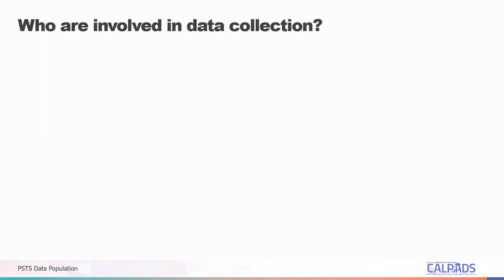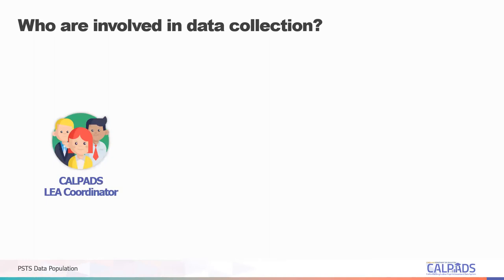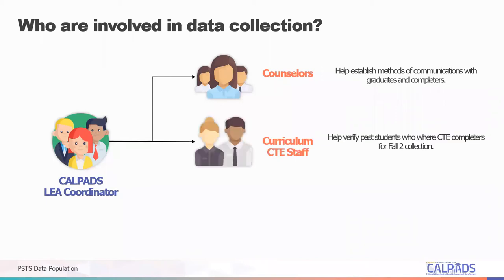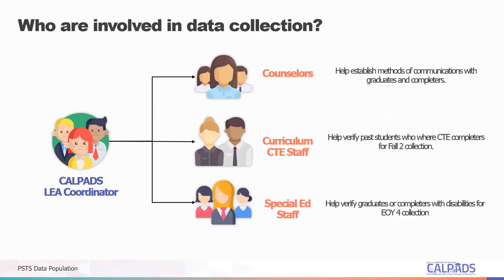This brings us to the question of who is involved in this data collection. Every CALPADS submission requires team effort. The CALPADS LEA coordinator can establish a team of resource persons to help identify eligible students and create a process to gather the data. CALPADS coordinators may involve school counselors to establish methods of communication with graduates and completers. Curriculum staff would help verify past students who were CTE completers for Fall 2 collection, and special education staff could help verify graduates with disabilities for the End of Year 4 collection.